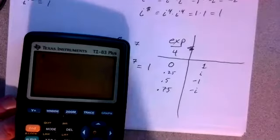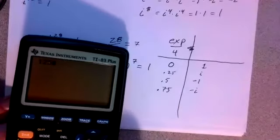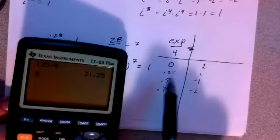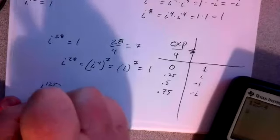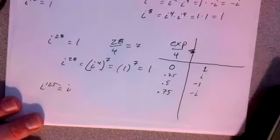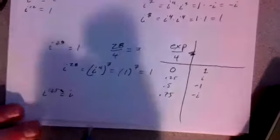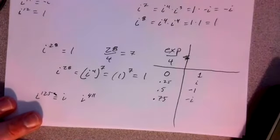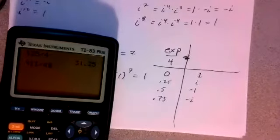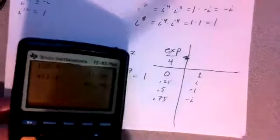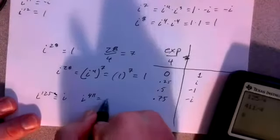Here's what I mean by that. If I took i to the 125th power — 125 divided by 4 is 31.25. That 0.25 tells me it's going to be i. So i raised to the 125th power equals i. What about i to the 411th power? 411 divided by 4 is 102.75. That 0.75, a remainder of 3, tells me it's going to be negative i. So i raised to the 411th power is negative i.